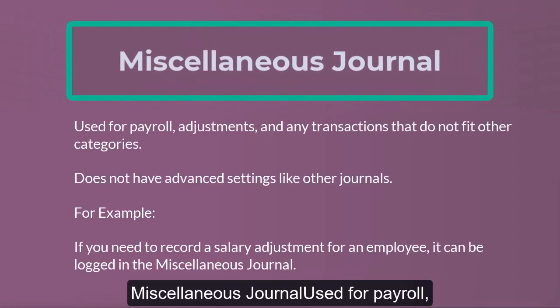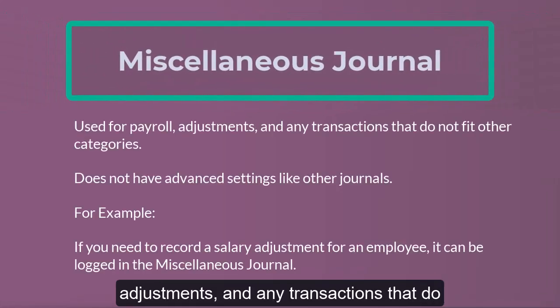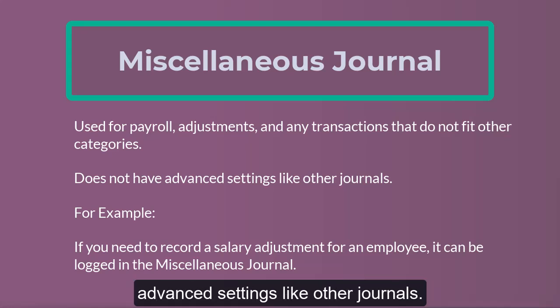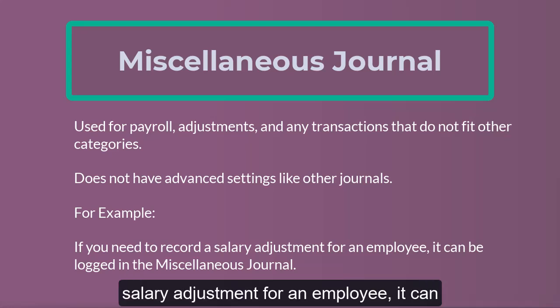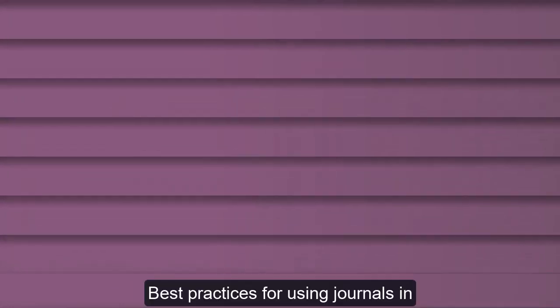The Miscellaneous Journal is used for payroll, adjustments, and any transactions that do not fit other categories. It does not have advanced settings like other journals. For example, if you need to record a salary adjustment for an employee, it can be logged in the miscellaneous journal.